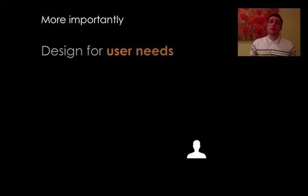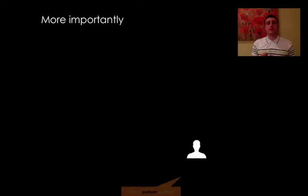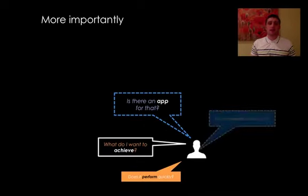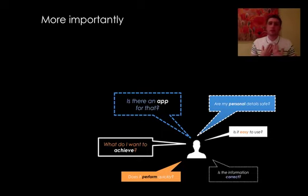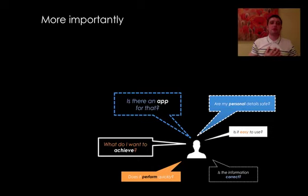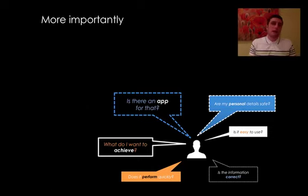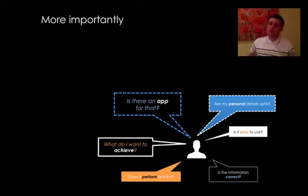More importantly, we need to design for user needs. User needs can be anything: does it perform quickly? Is there an app for that? Are my details going to be safe? Is it easy to use? Is the information given correct? How do I use it? These are the things we need to take into account — and that is how we try to create the best GUI we can. Design for user needs. Always remember it.